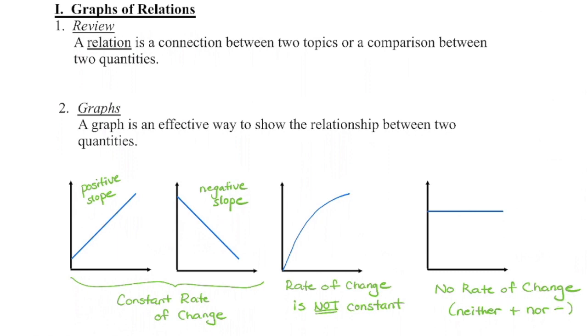The two that are constant rates of change are the first two. Because again, if we assume that this is time, in these two cases we are increasing steadily at the same amount as time passes. In the second one, we're decreasing steadily at the same amount as time passes. So both of those graphs are a constant rate of change.